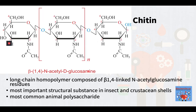Next is chitin. Chitin, a long-chain homopolymer of beta-1,4-linked N-acetylglucosamine residues, is the most important structural substance in insect and crustacean shells. Specifically, it is a primary component of cell walls in fungi, the exoskeletons of arthropods such as crustaceans and insects, the radulae of mollusks, cephalopod beaks, and the scales of fish and amphibians. Thus, it is considered the most common animal polysaccharide.